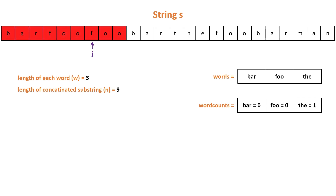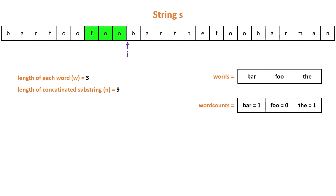In a similar way, we check every index, where j is initialized with the value of the current index. Each time we calculate the word counts, so it's better to create the map first and copy it at each iteration. Now I'll show a proper index. If we start checking from index 6, we get all the words one by one. First substring is foo — available, move j forward. Next substring is bar — available, move j again. Next substring is da — available, move j again. We get a concatenated substring of length n, which is 9 in this case. So 6 is a proper index — add 6 to the result list. In this way, check for all possible indices.